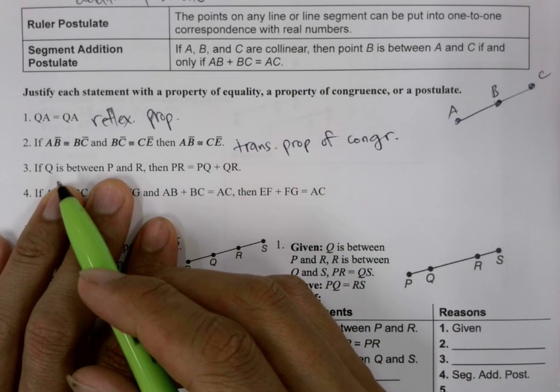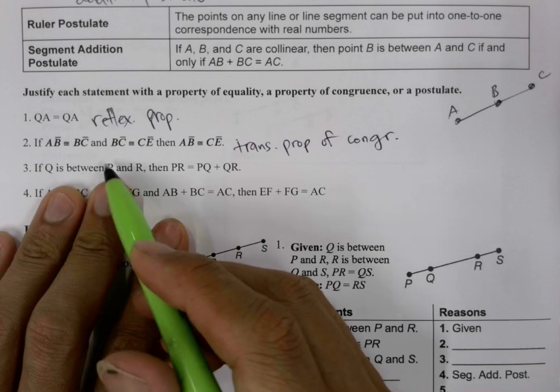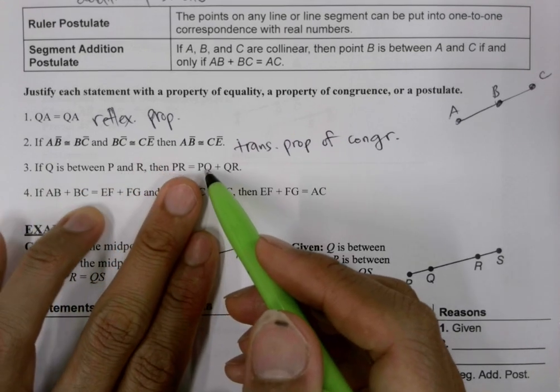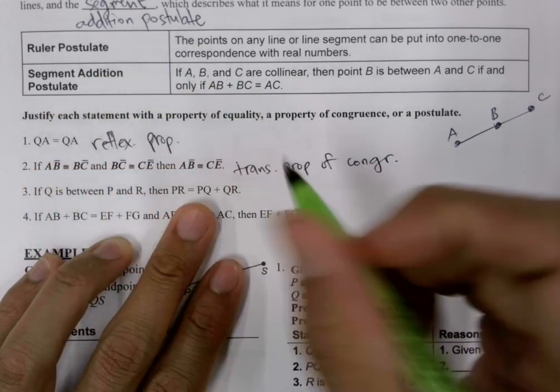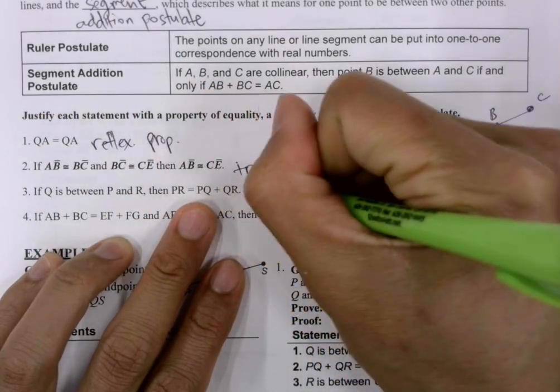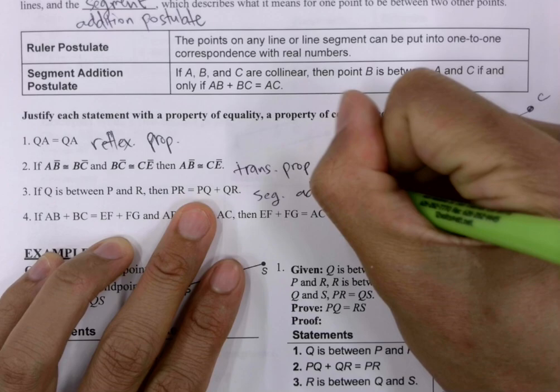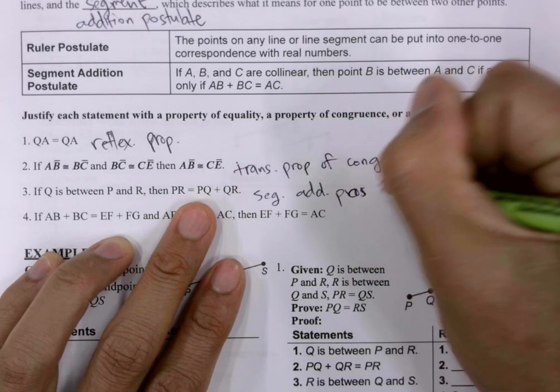And so, here we have Q is between P and R. Then, PR is equal to PQ plus QR. That's our star here. That's the segment addition postulate.